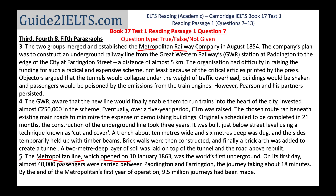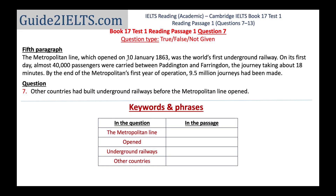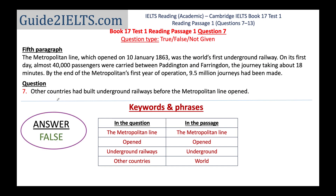Now that I have a tentative location, I go back and read the question again: 'Other countries had built underground railways before the metropolitan line opened.' So if the passage tells me underground railways had been built in other countries before, the answer is True; if not, False; and if I cannot be sure from the passage, Not Given. We get our answer from the very first sentence of the fifth paragraph: 'The metropolitan line was the world's first underground railway.' Because it was the first one in the world, obviously no other country had built one before. The answer is False.